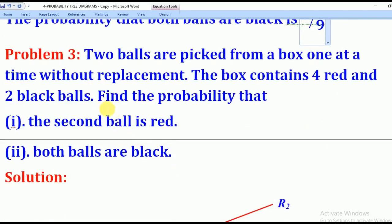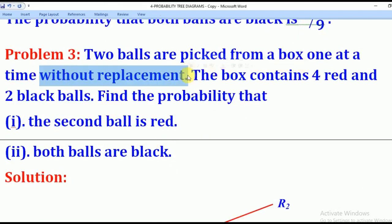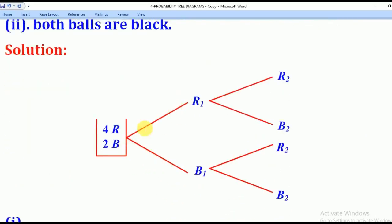Now we shall go to Problem 3. Two balls are picked from a box, one at a time, without replacement. Note that here they want it without replacement. The box contains four red and two black balls. Find the probability that: Roman 1 — the second ball is red; and Roman 2 — both balls are black.